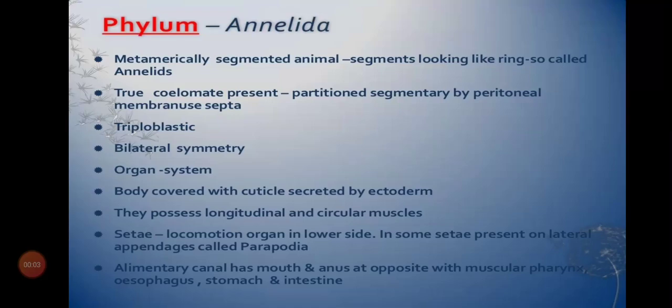Welcome back. In the last video we learned about phylum Aschelminthes — its main characteristics: muscular pharynx, pseudocoelomate, triploblastic, complete digestive system but no circulatory system, no respiratory system. The nervous system appears in a primitive form — only a nerve ring. Common examples are Ascaris (roundworm found in intestine as a parasite) and Wuchereria (filarial worm causing elephantiasis in humans).